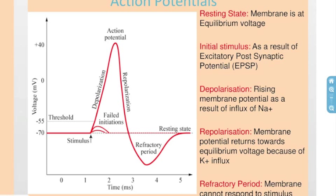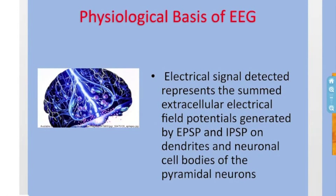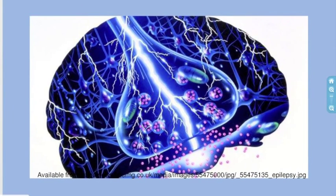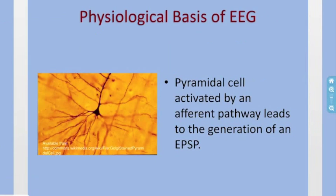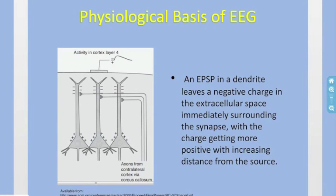Throughout this whole process we have a refractory period, which means the membrane cannot respond to a stimulus. In the next few slides we'll be talking about the physiological basis behind an EEG signal. This can be further explained by considering the electrical activity of a single pyramidal cell activated by an afferent pathway. The incoming signal at the synapse gives rise to a post-synaptic potential resulting from positively charged ions rushing into the cell. As this current propagates down the conductive dendrite of the neuron, the size of the EPSP decreases.